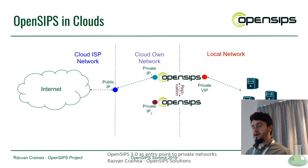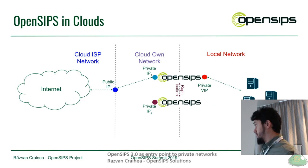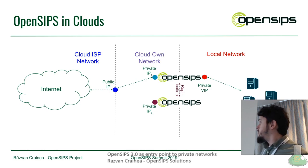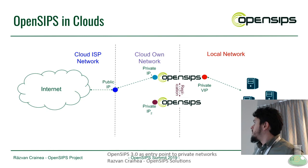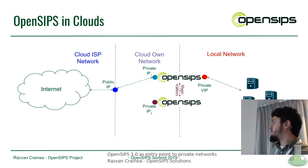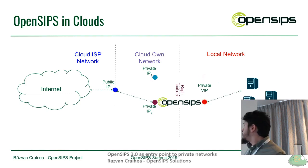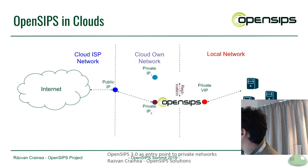Let's see how OpenSIPs behaves in this kind of setup. Instead of two layers of networking, there are actually three: the ISP of the cloud provider, the cloud-owned internally-managed network, and our local network. However, due to network constraints, we can't have a VIP on the cloud side — we have to have two different IPs: private IP1 and private IP2. On our local side we can still control the network and have a VIP.